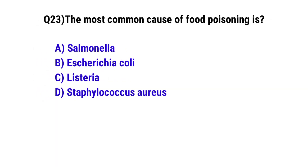Question number 23. The most common cause of food poisoning is. The correct option is A: Salmonella.